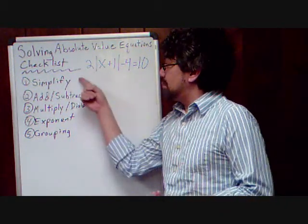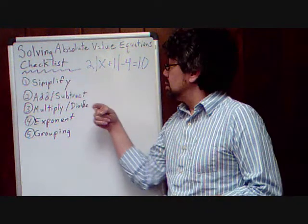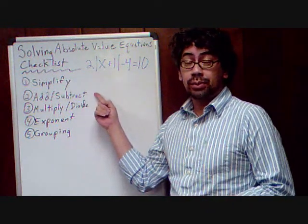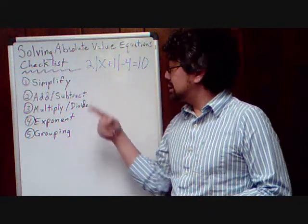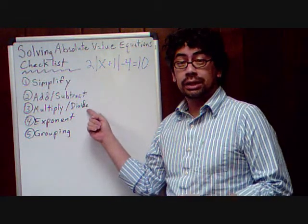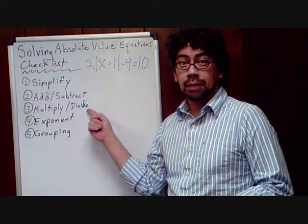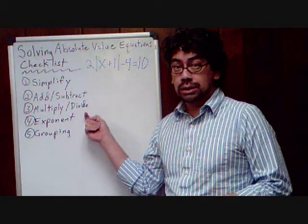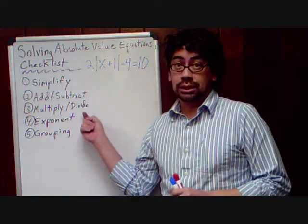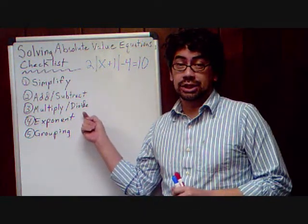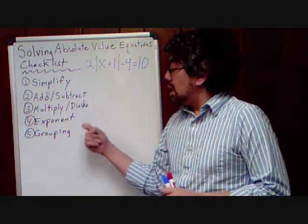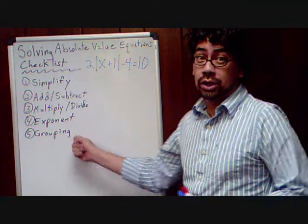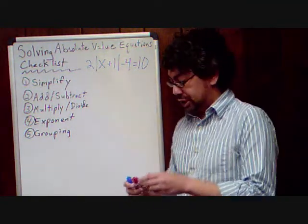In these steps we're going to simplify, add, subtract — remember this is the opposite operations, opposite sides — multiply, divide, again opposite operations, opposite sides, exponents — we still won't get to this in this section — and grouping. We will now see what grouping looks like in this type of equation.